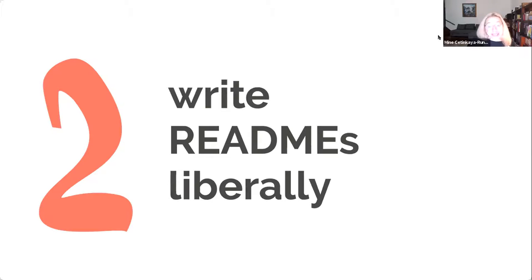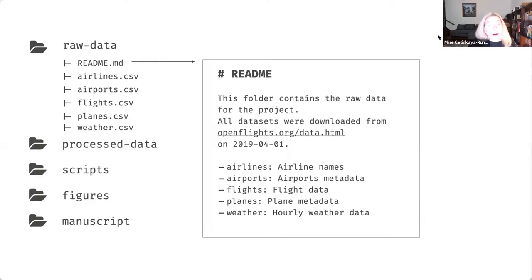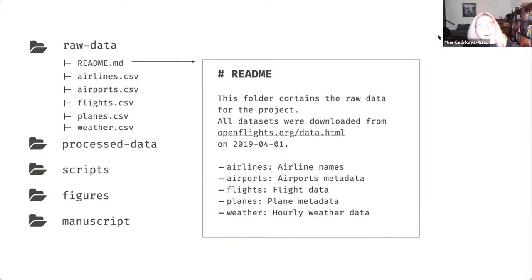Number two: write READMEs liberally. If in your raw data folder you have a bunch of CSV files — even if they are reasonably named and one can tell one file contains information on airlines and another on airports — add a README in there. In that README, actually describe where the data came from. If you downloaded it from somewhere, on which date and how did you do that? Also include information about each of the data files, so the first reaction of somebody landing in that folder is to open the README and get all the information they need without having to open the files.